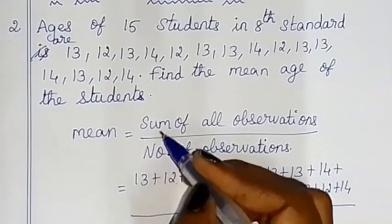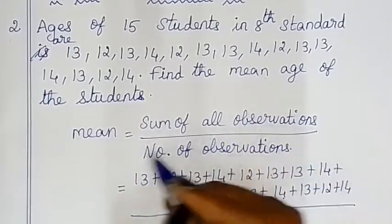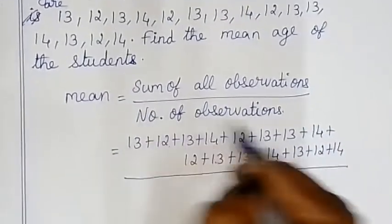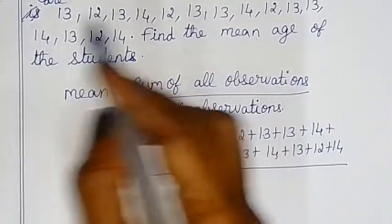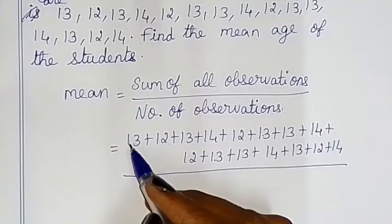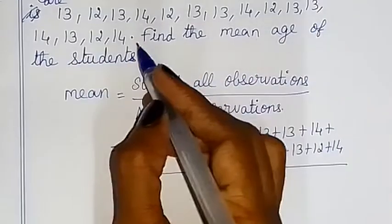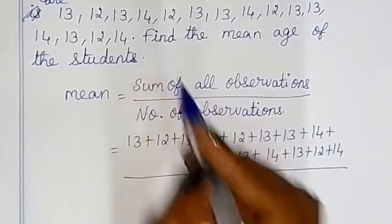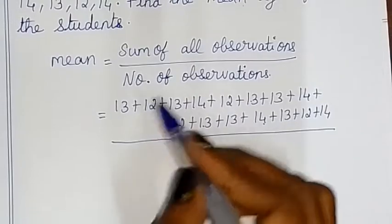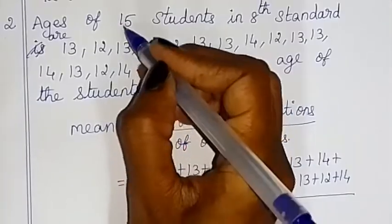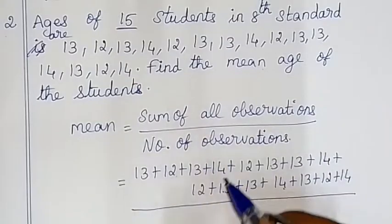The arithmetic mean formula is: sum of all observations divided by number of observations. The sum of all observations means we add all the values — so 13 plus 12 plus 13 plus 14 and so on — divided by the number of observations, which is 15 students.